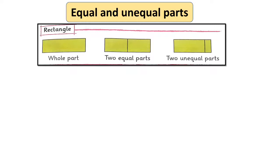Next rectangle is divided into two equal parts. It has two parts and both are equal. The last rectangle shows two unequal parts. It has two parts but they are not equal.